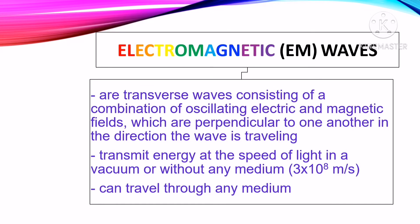Electromagnetic waves are transverse waves consisting of a combination of oscillating electric and magnetic fields, which are perpendicular to one another in the direction the wave is traveling. Electromagnetic waves transmit energy at the speed of light in a vacuum or without any medium at 3 times 10 to the power of 8 meters per second.